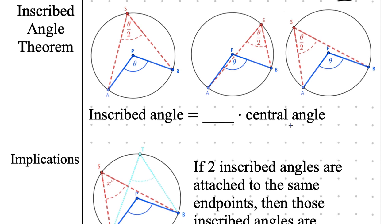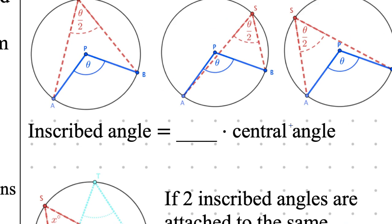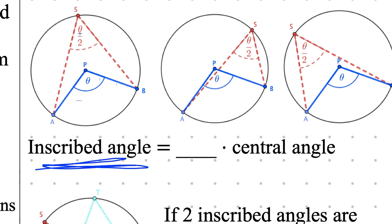Let's write down our formula. Assuming the central angle is theta, I can say: central angle equals theta. How much of theta do you need to get the inscribed angle? Write down that red angle you see. Is it a third? Times four? How much bigger or smaller is the inscribed angle compared to the central angle?